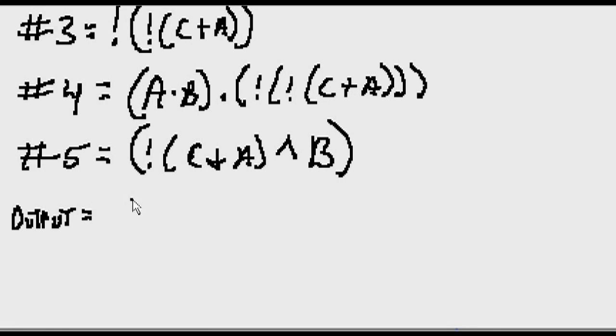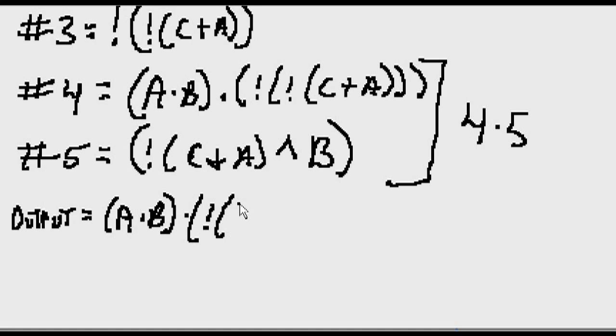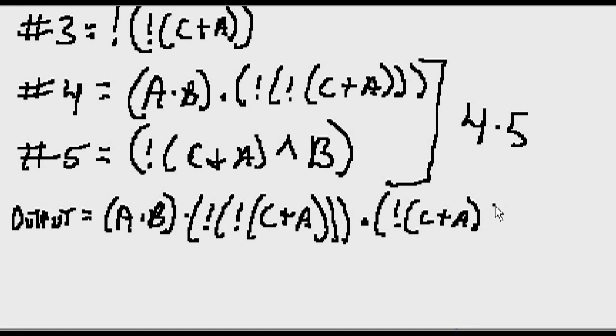Output equals four ANDed with five. Four ANDed with five is our output. So let's do it. A and B and NOT NOT NOT C or A, till three. And it's going to be ANDed with number five, which is NOT C or A XORed with B. And this is our final Boolean expression.